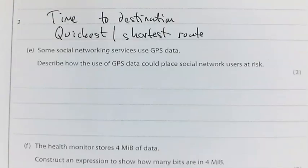In this next question, Part E: Some social networking services use GPS data. Describe how use of GPS data could place social network users at risk. Some students gain full marks because they wrote about consequences. What this is saying is GPS data could be shared with social networks. How could that pose a risk to the users?